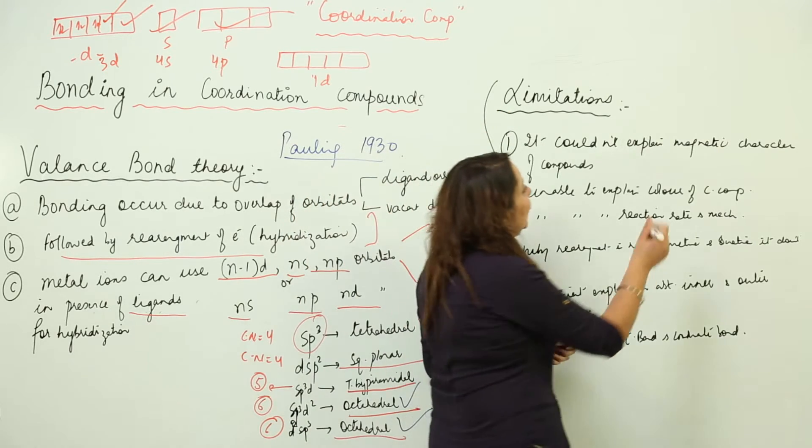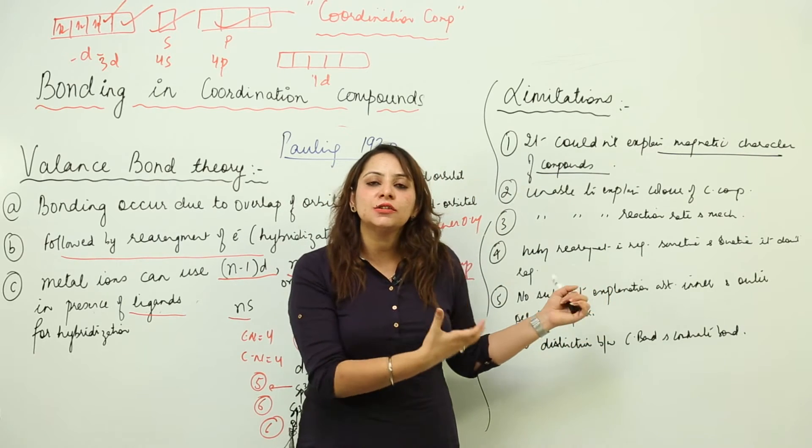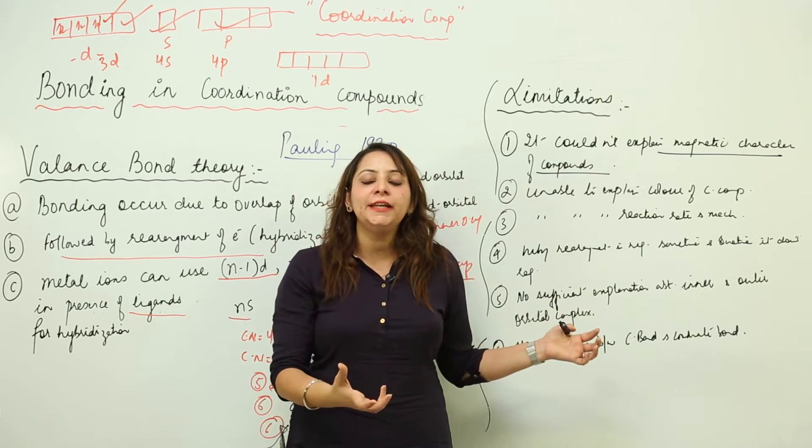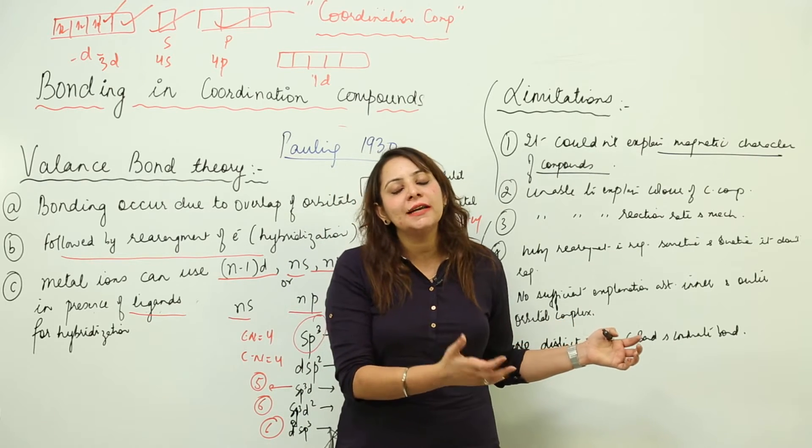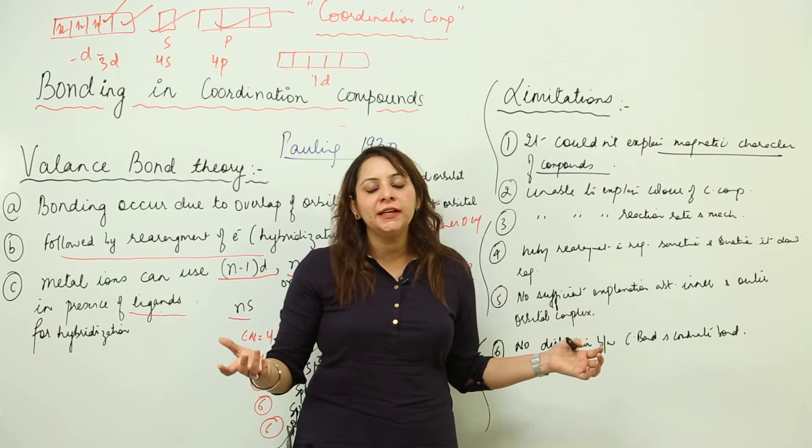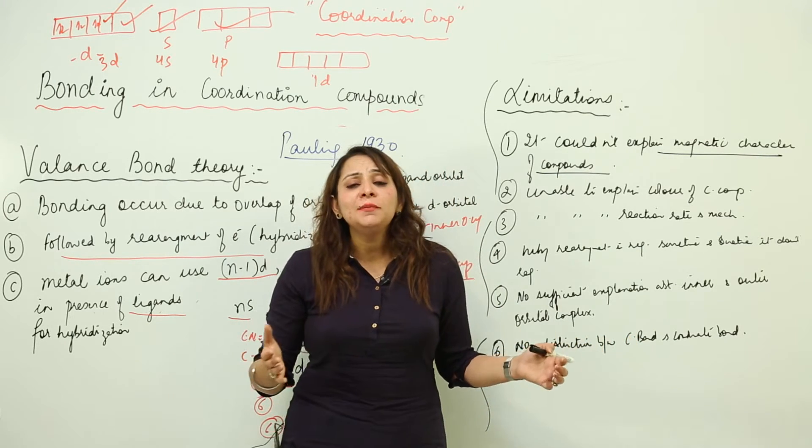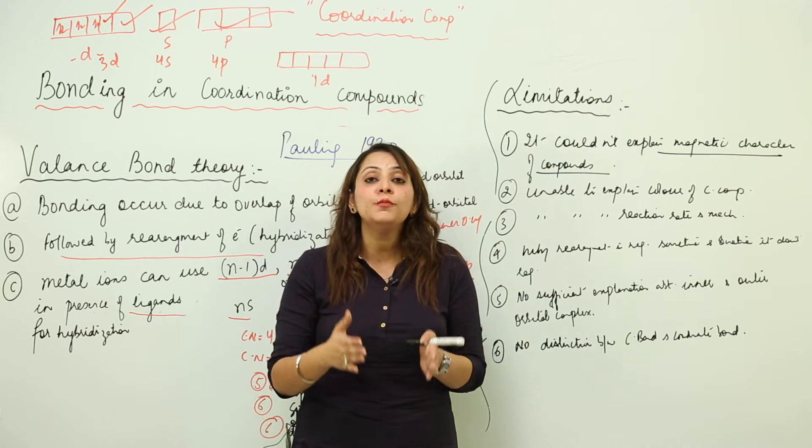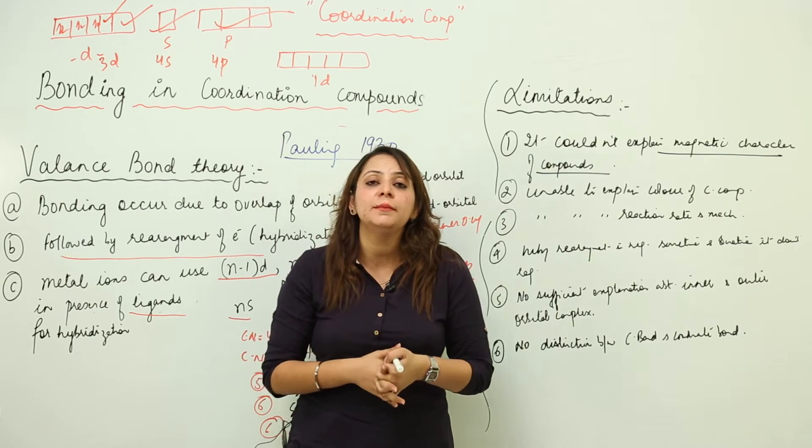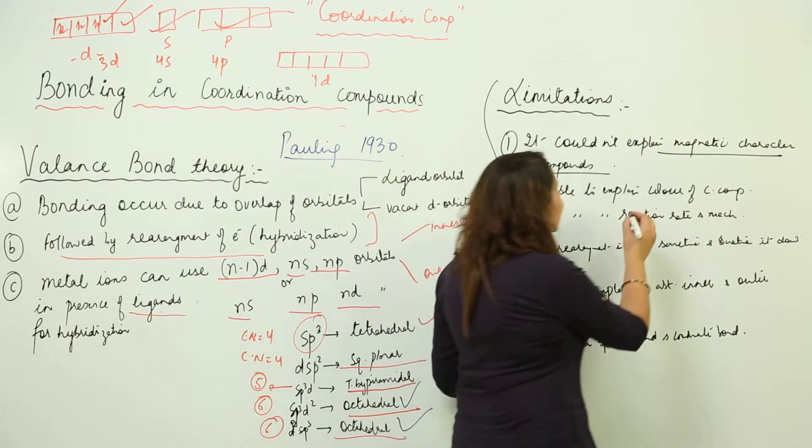First, it could not explain the magnetic character of the compounds. As you already know, when I took an example, I told you directly that due to experimental studies it is diamagnetic or paramagnetic. You need to pair up here, you don't need to pair up there. That means there is no relevant reason behind the magnetic properties. This is one of the most important limitations of Valence Bond Theory.